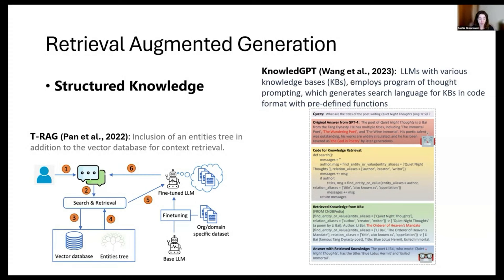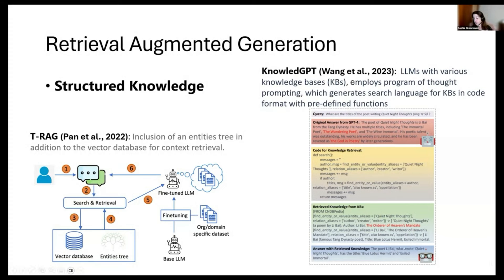KnowledgeGPT uses what's called the 'program of thought' prompting technique. It generates search queries for knowledge bases and has two tasks: knowledge retrieval and knowledge storage. The small models here are the retrievers for the RAG system. Retrieval for KnowledgeGPT involves three steps: it generates a piece of search code, the search code is executed to retrieve the relevant knowledge, and then everything is fed into the actual LLM to answer the input query.